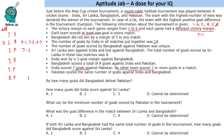Bangladesh scored a total of 8 goals against India and Pakistan combined. If Bangladesh scored 1 against India, then Bangladesh vs Pakistan becomes 7-1, which is not possible since no other team scored 7 goals. If Bangladesh scored 2, then Bangladesh vs Pakistan becomes 6-1 with a margin of 5, but Bangladesh did not win by a margin of 5 — so this is also not possible. Therefore India vs Bangladesh must be 6-3, and Bangladesh needs 5 more goals to total 8, making Bangladesh vs Pakistan 5-1 with a margin of 4.